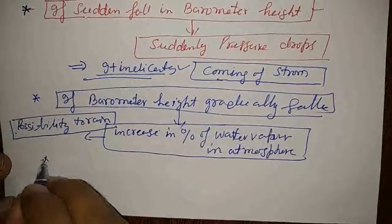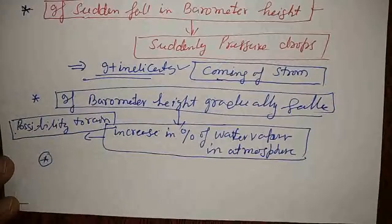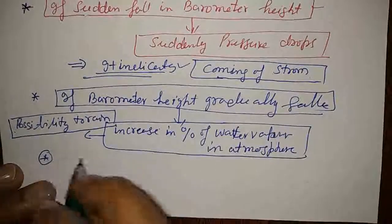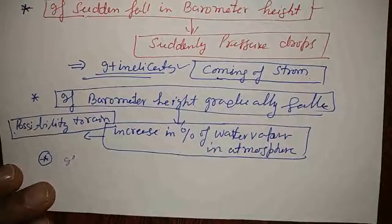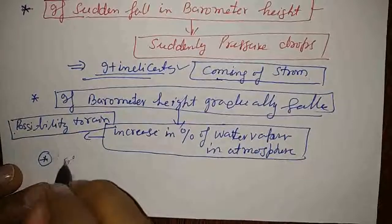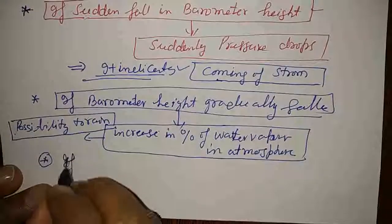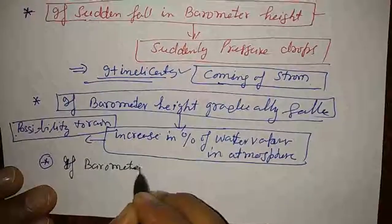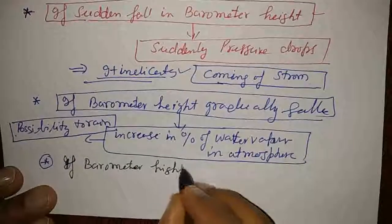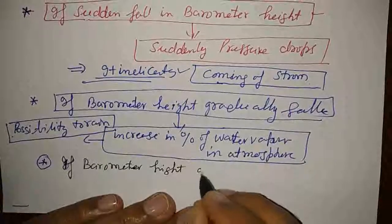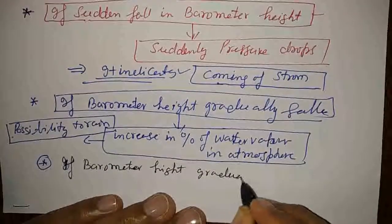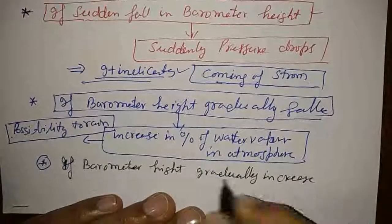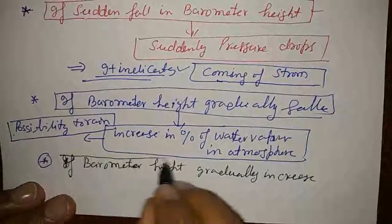Now one more last prediction we may make due to change in barometric height. In place of decreasing, if the barometer height gradually increases — slowly and gradually increases — what does it mean?